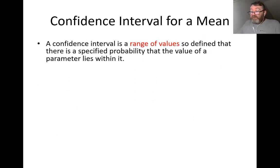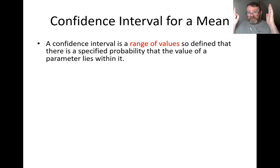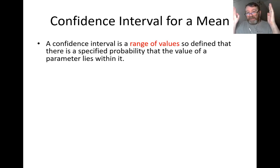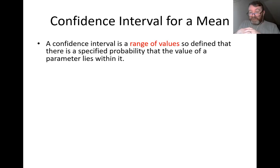A confidence interval is a range of values — a list of numbers starting at the smallest and finishing at the highest. It has a lower value and an upper value. Within 95% confidence, I can say that my population parameter is between those two values.